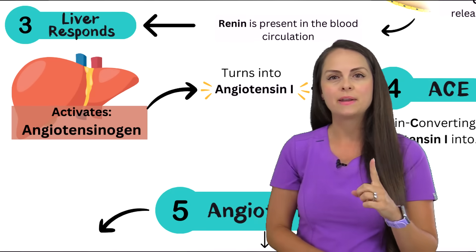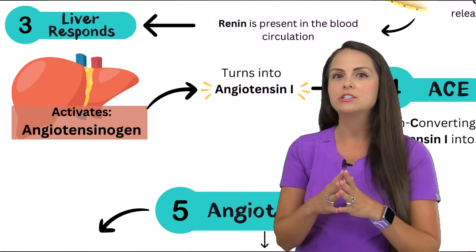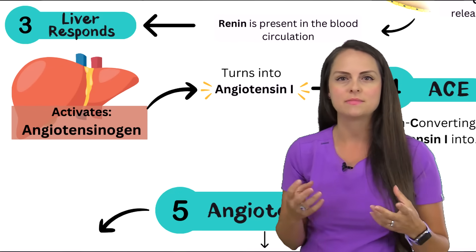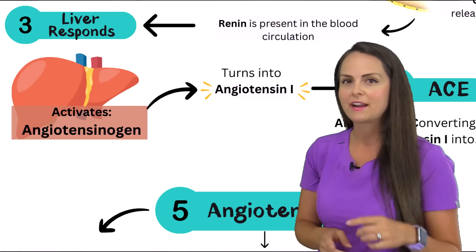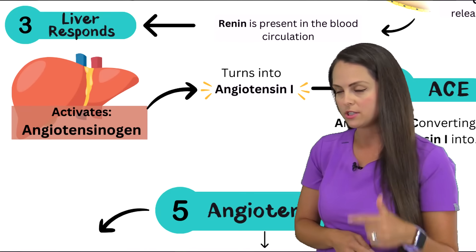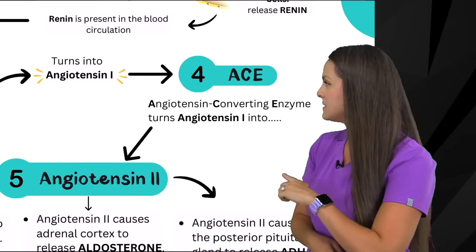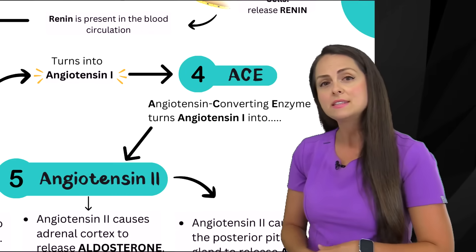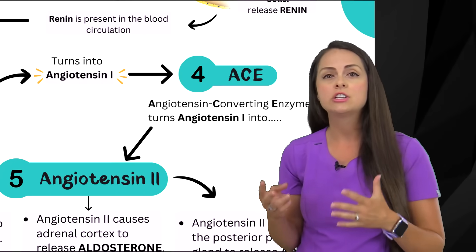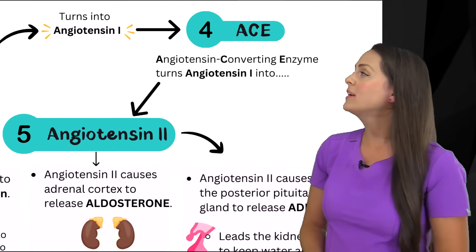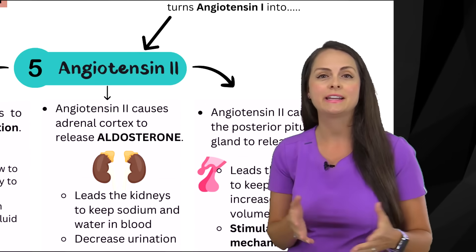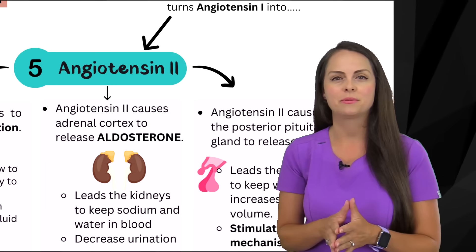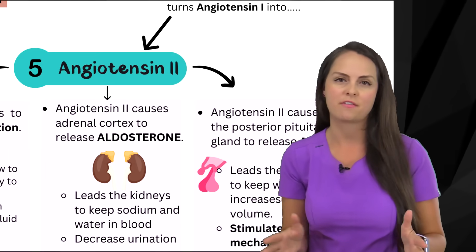So we have angiotensin 1, but the whole goal is to get angiotensin 2 involved, because that is the major hormone that's going to actually cause things to happen. How do we get from angiotensin 1 to angiotensin 2? That is where ACE comes in. ACE stands for angiotensin converting enzyme, and this helps turn angiotensin 1 into angiotensin 2. Now that we have angiotensin 2 involved, things are going to start getting interesting, because we'll be able to achieve our goal of increasing blood pressure, since angiotensin 2 has major effects on the body.